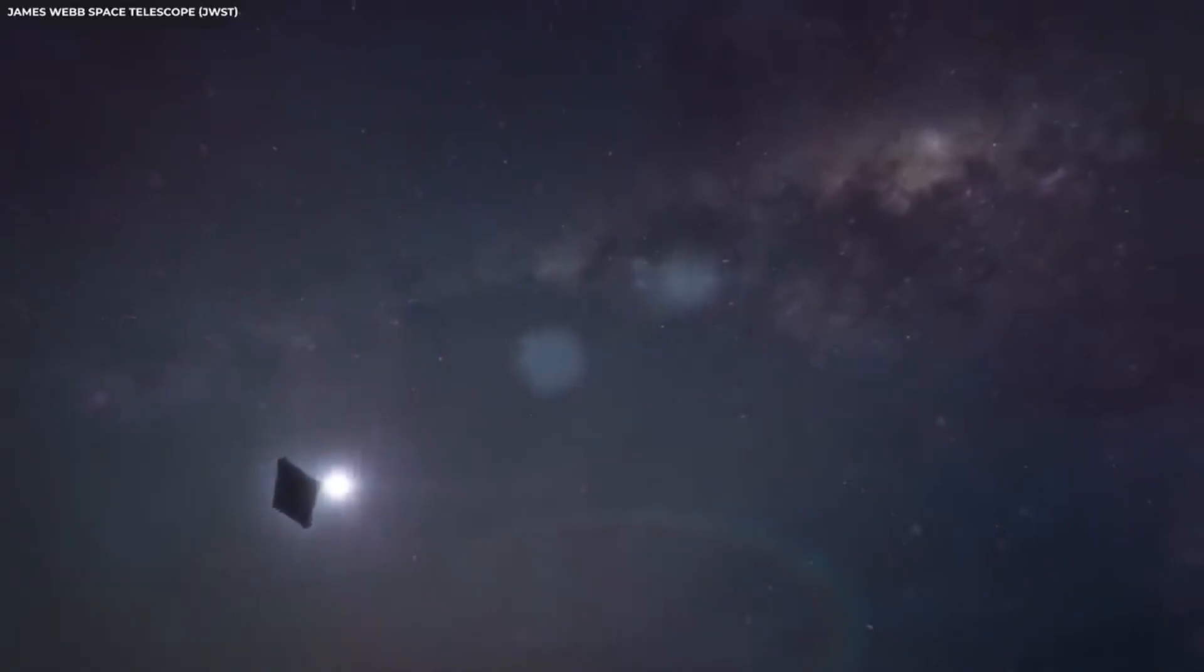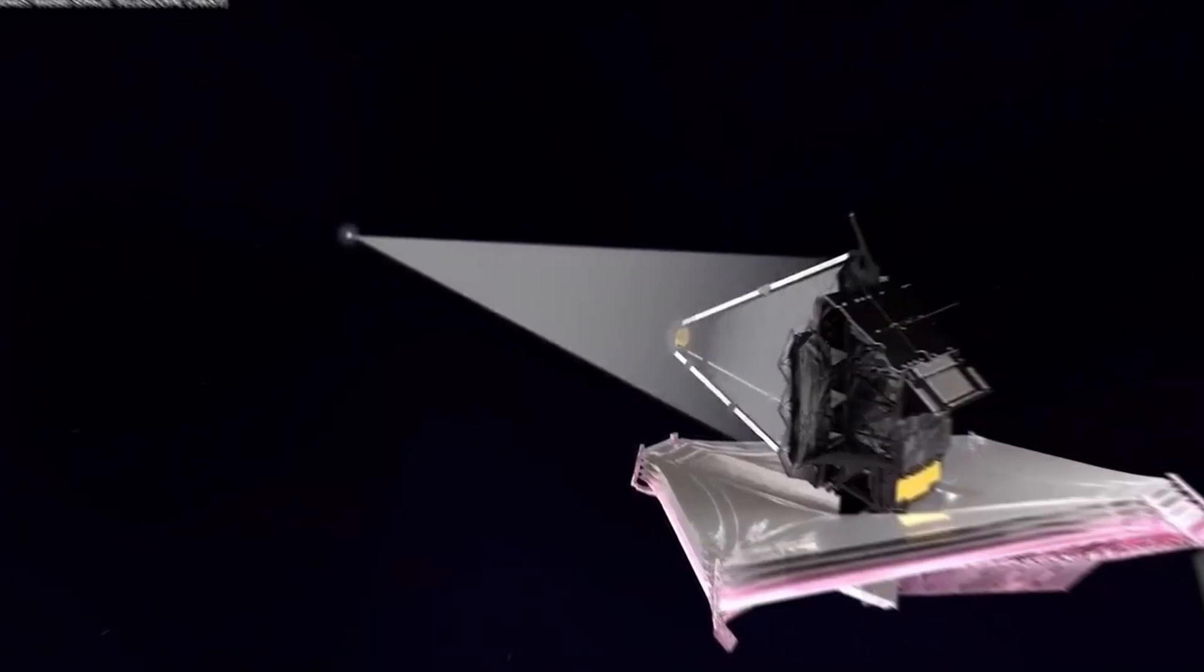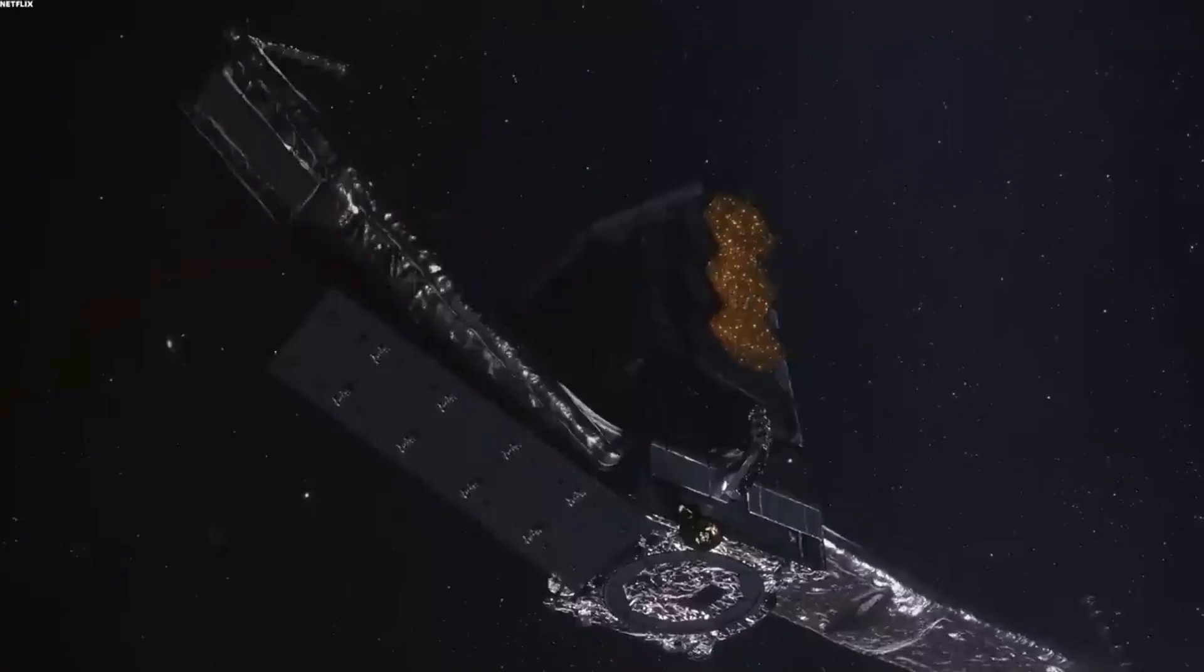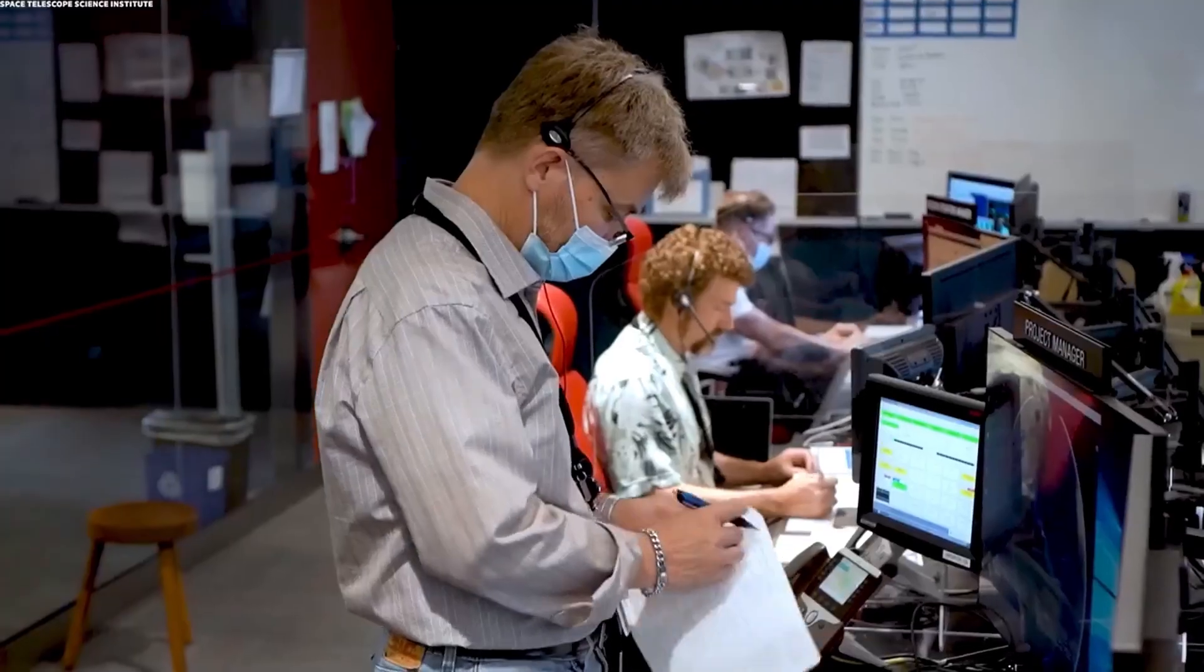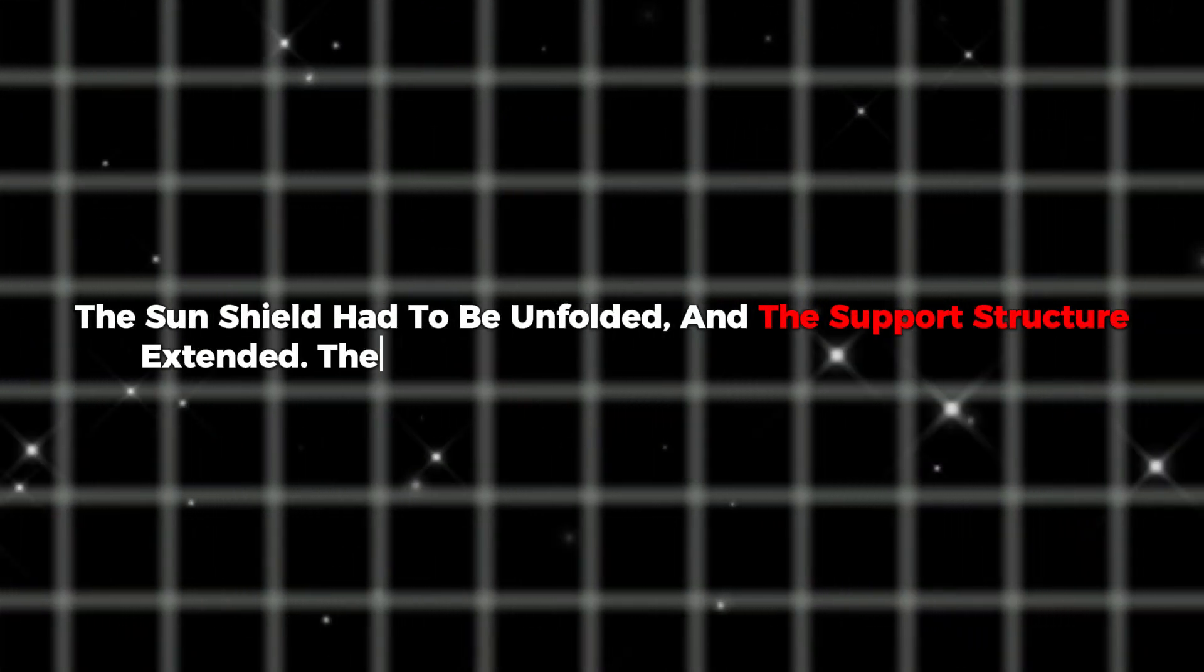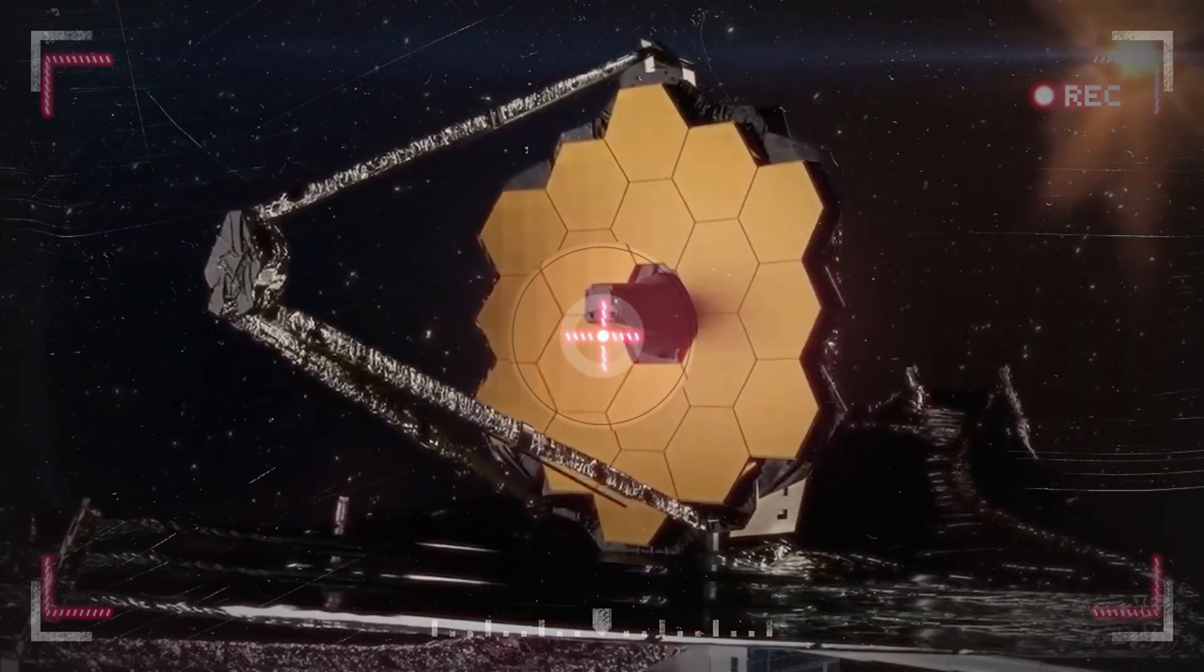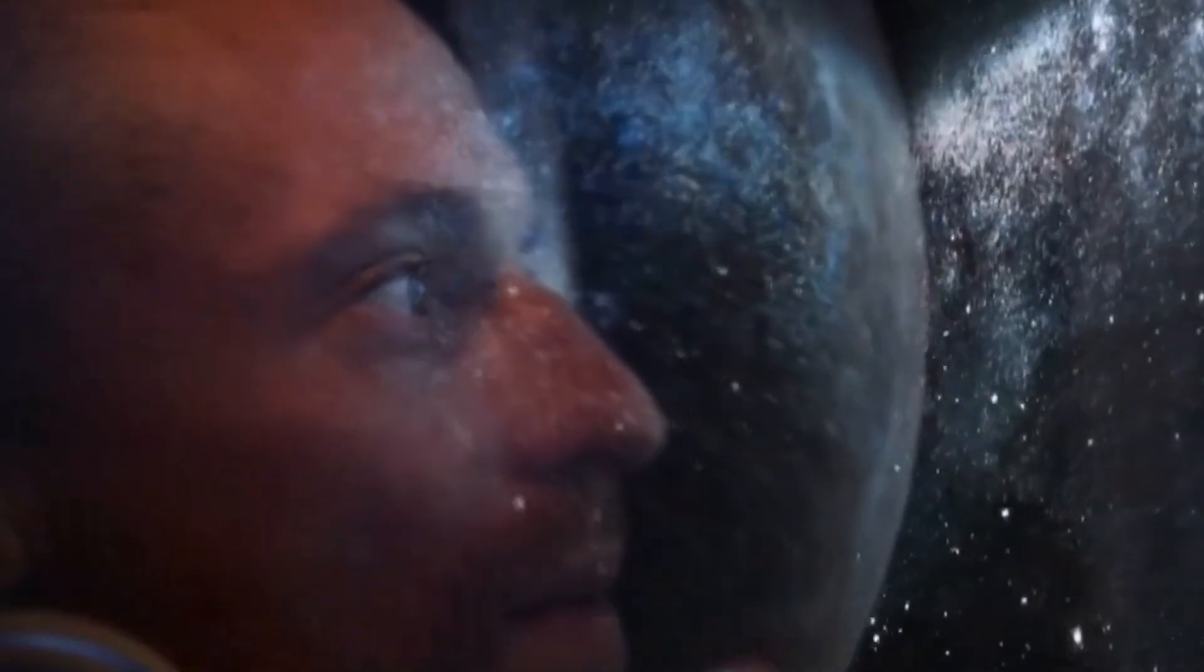Another critical test involved powering up the scientific instruments one by one to check their functionality. Setting up the telescope involved a series of important steps to make sure it worked perfectly. First, the sunshield had to be unfolded, and the support structure extended. Then the main mirror was slowly deployed. Once everything was in place, the mirror required precise tuning to align it exactly for scientific observations.